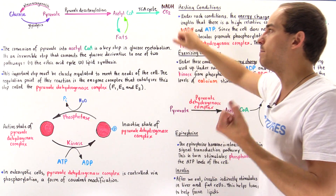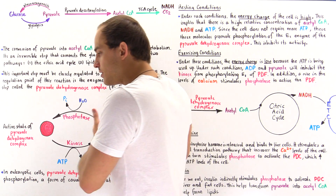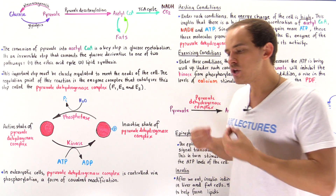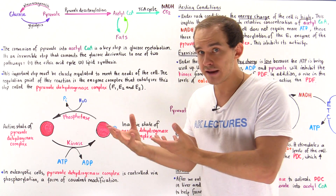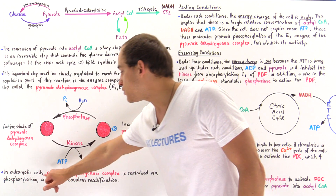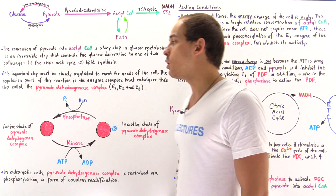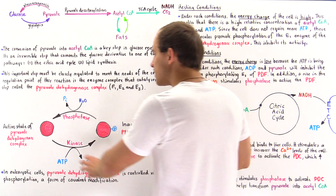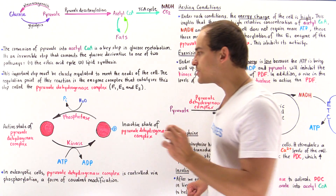In addition to these regulatory pathways, in eukaryotic cells such as the cells of our body, we also have another important regulatory method. We actually use a type of covalent modification — namely phosphorylation — to regulate the activity of this complex. In eukaryotic cells, pyruvate dehydrogenase complex is controlled via phosphorylation. Looking at this diagram: this is our pyruvate dehydrogenase complex in its active form, and notice it is not phosphorylated.